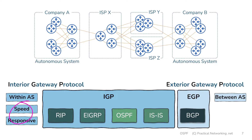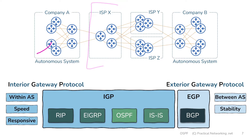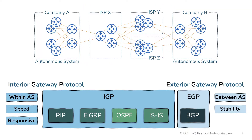Unlike IGPs, EGPs are tuned for stability. If something were to happen to a router, company A might want the other routers in its topology to instantly know about it, but we might want to shield the rest of the internet from knowing about something small that occurred in company A's network. If you think about how many failures occur across thousands of companies on the internet, we wouldn't want the entire internet to be flooded with every small failure event. Instead, exterior gateway protocols intentionally limit how often updates are sent or received.